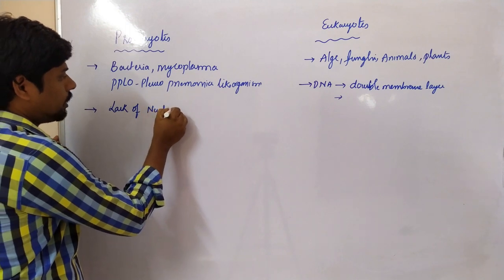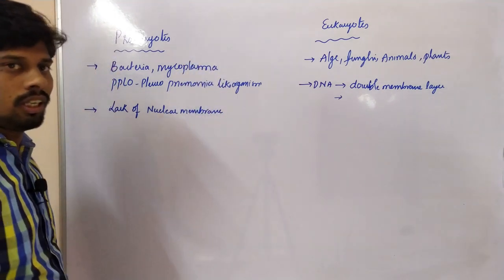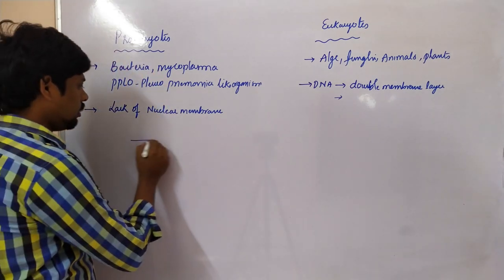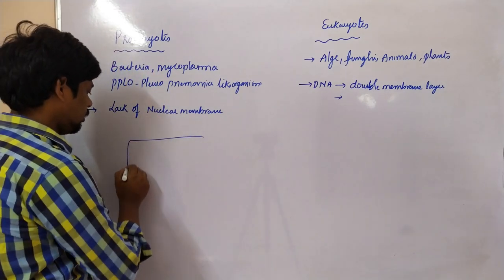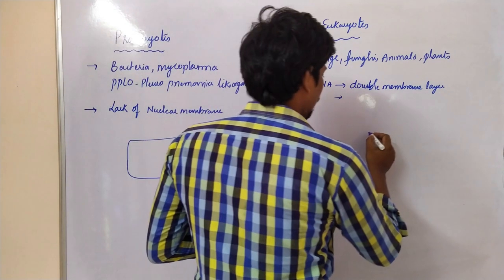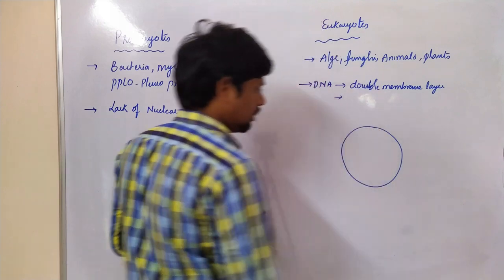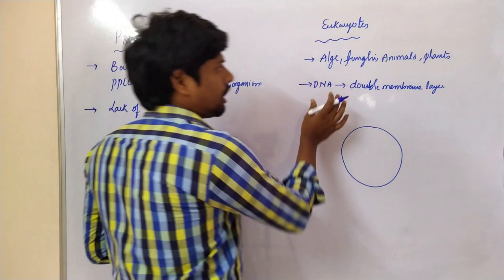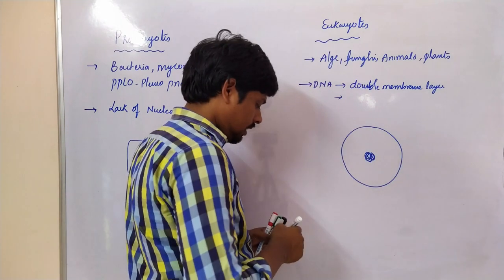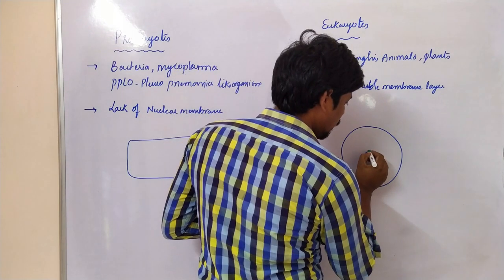Organisms that lack the double membrane layer around the DNA are called prokaryotes — lack of nuclear membrane. I am going to draw a diagram. Here is a bacterium, and here is a eukaryotic cell. The eukaryotic cell contains DNA that is enclosed by the double membrane layer, which is the nucleus.